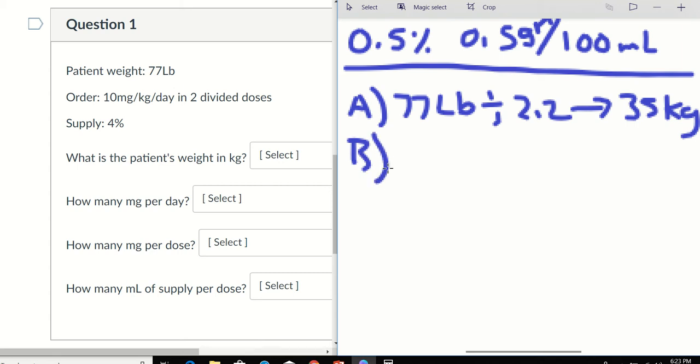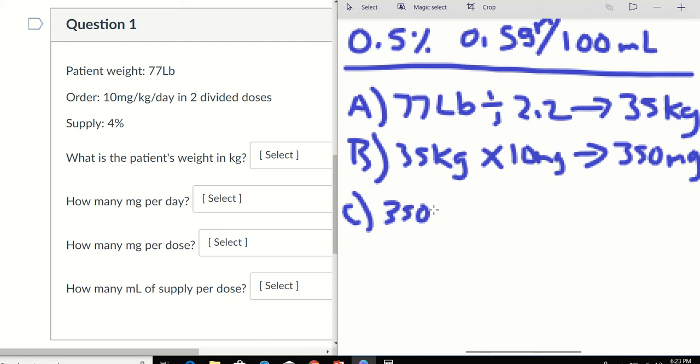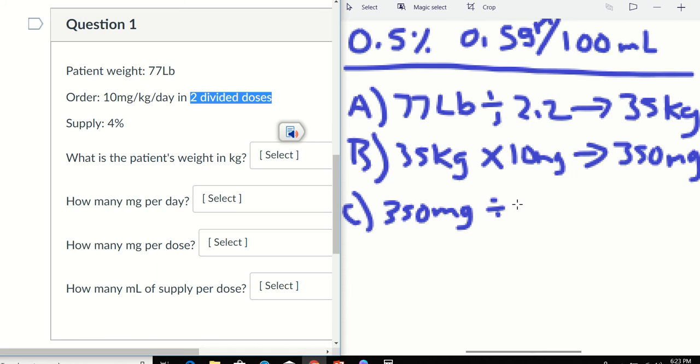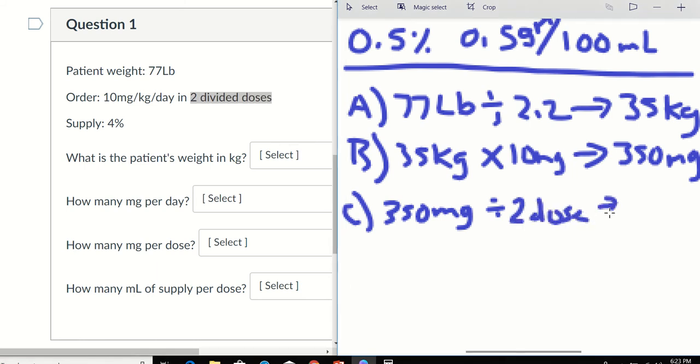Next step, we got the kgs. We're going to multiply by the order. Order per kg. So in this case, it is 10. So every day, they will get 350 milligrams. Are we going to give it to them all at once? No. We might harm them if we do. So here, they're going to divide it by 2 doses. So we'll divide by 2 doses. And that's going to give us 175 mg.